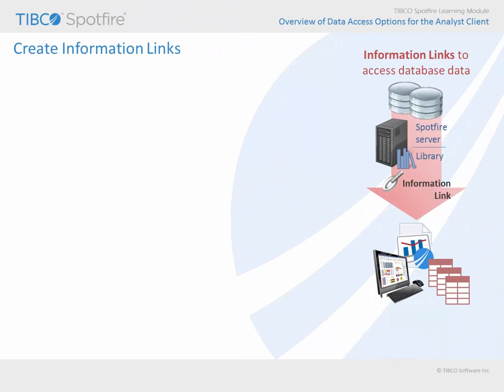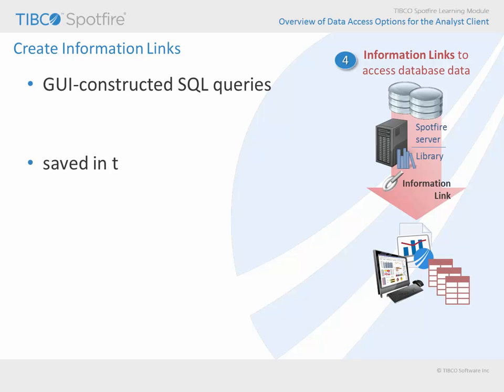Another way to access data in databases is to configure information links. Information links are database queries which are created using the Spotfire server. These queries are SQL-based. However, the information designer creates these queries with a series of graphical user interface dialogs, so no knowledge of the SQL language is required in order to create information links. Information links are stored within the server library and are particularly useful when designing data access for others, because they can be designed to limit data queried, perform joins between different database tables, and apply conditioning steps like data pivoting, which is all invisible to the user.